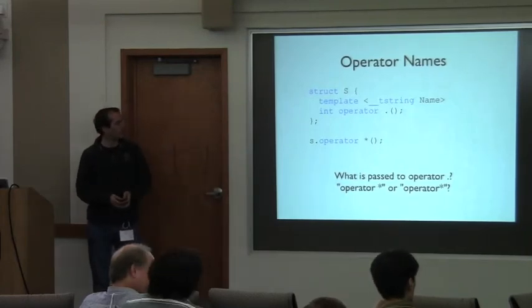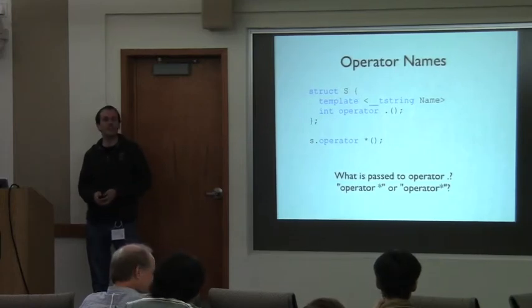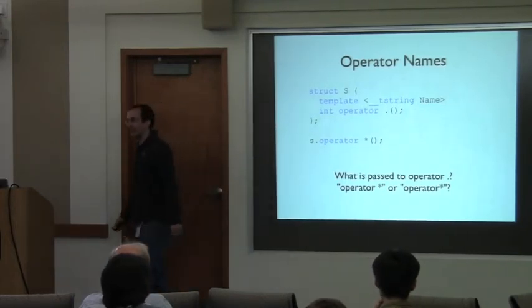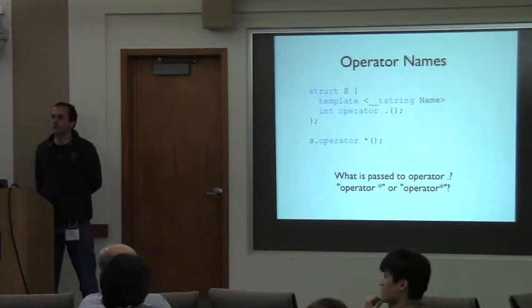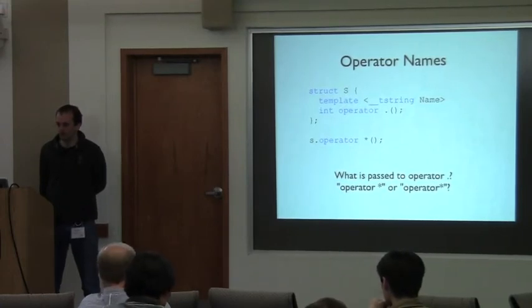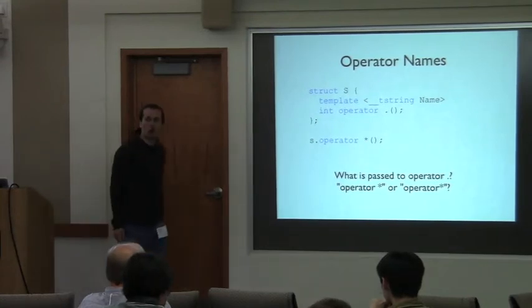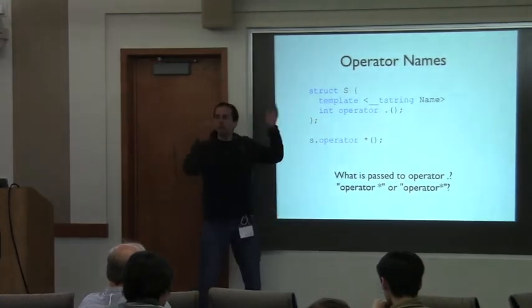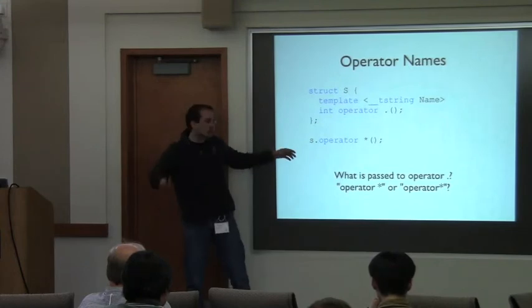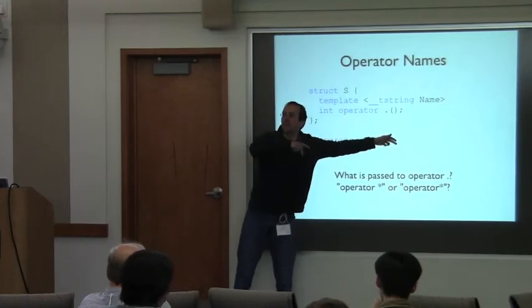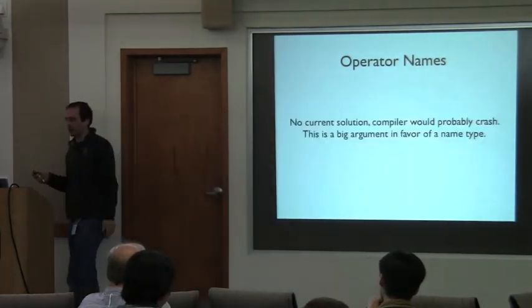A question: if the data you're trying to access is a function that accepts parameters, how do you pass the parameters? The member access is separate from the call. First you go through the member access operator to resolve that part, then you use the call expression on the result — the parameters are passed in the call, not in the member access.